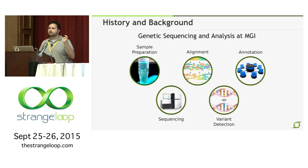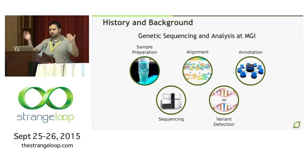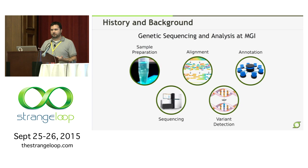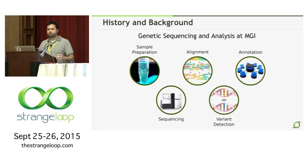Those short reads then need to be aligned back to the human reference. You might remember back in 2003 or so we did this thing called the Human Genome Project — to figure out what the letters of A's, C's, T's and G's are that make up the entire human genome. That isn't everybody's genome; that's roughly four people's genome. But it gives you a scaffold to put all of these short reads onto. There are a handful of tools that can do this alignment, and it's an active area of research. We don't do that a lot at MGI, but we orchestrate a lot of that work.